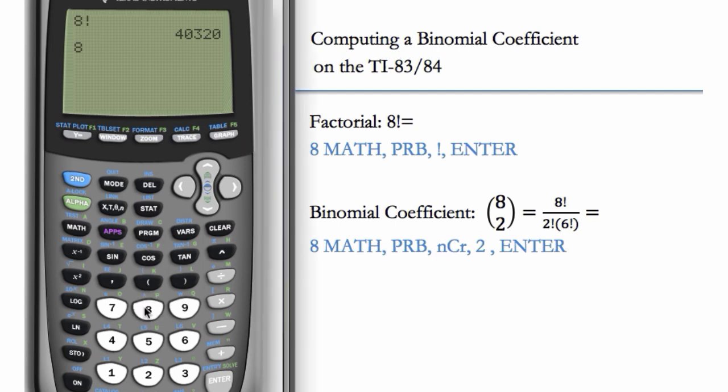We'll start by entering 8, then MATH along the left, over to PRB, choose number 3 which is nCr. Now enter the second number, 2, so out of 8, choose 2 to be of one type. The result is 28 combinations.